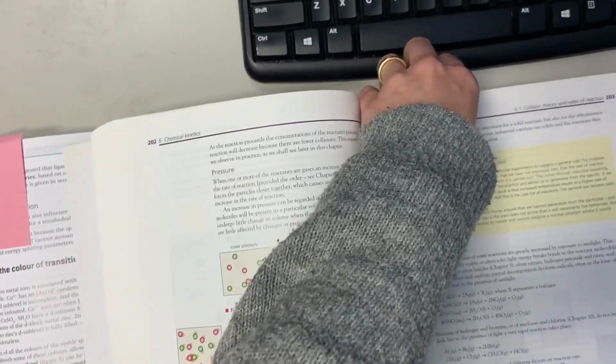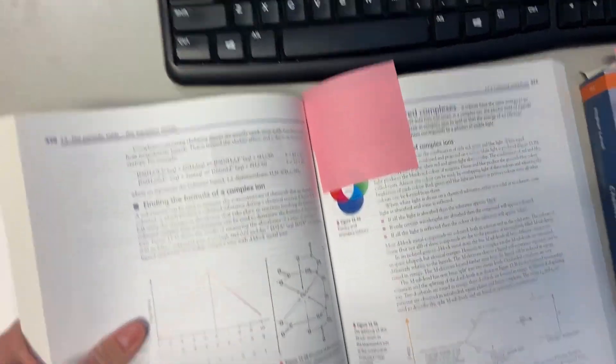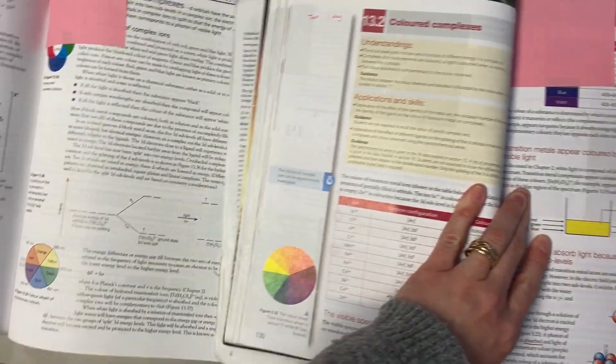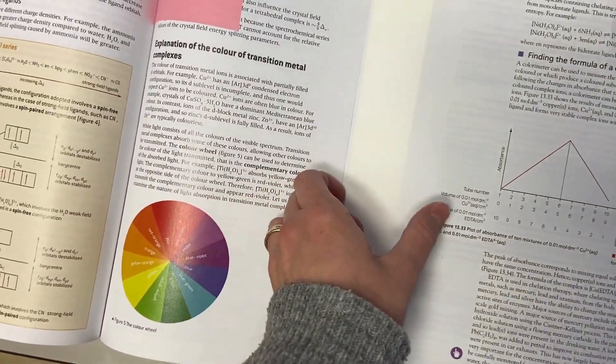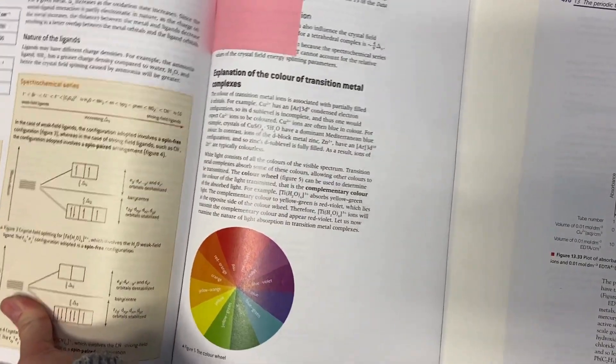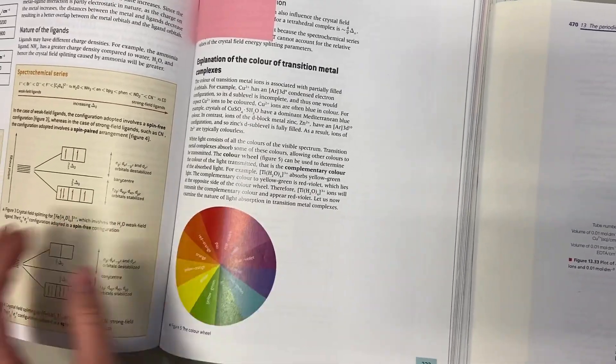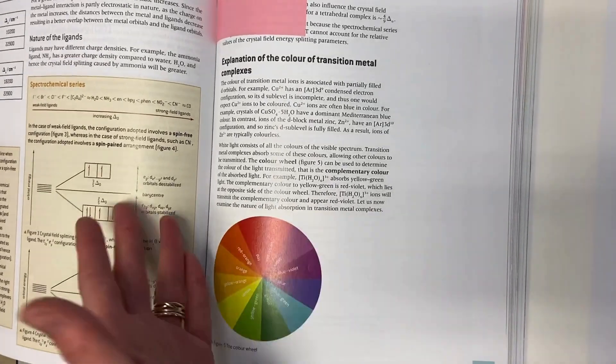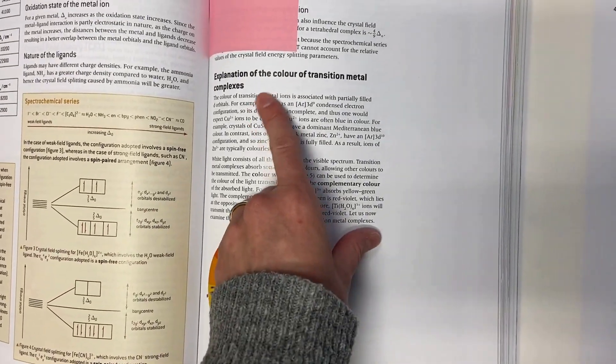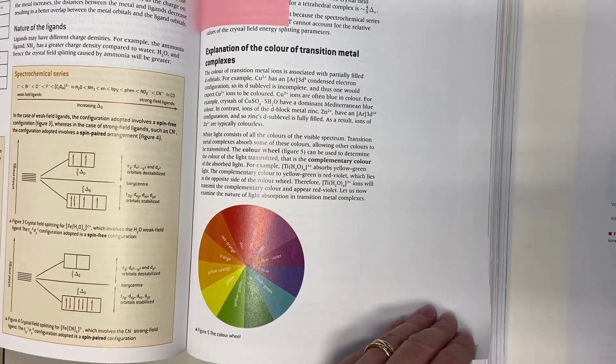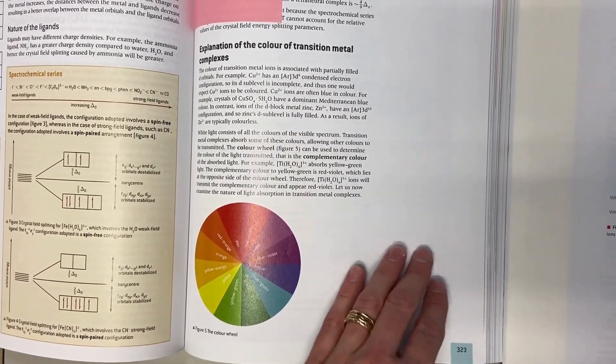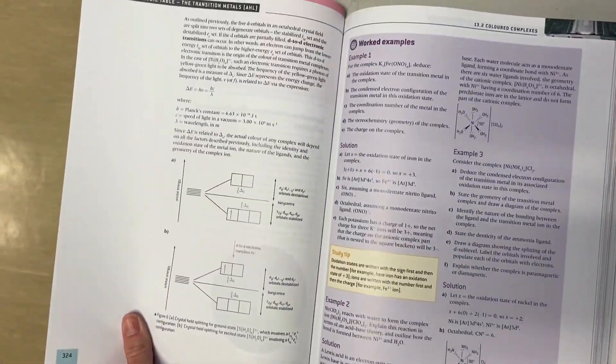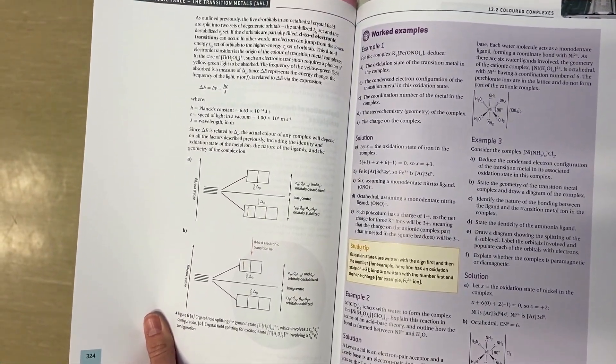We'll look at chapter 13 with the transition metals and colors because this is a big topic and there are a lot of exam questions on this. Look, this is the Oxford textbook explanation of the color of transition complexes. Again, this is a topic you want to be comfortable with and you want to understand. There's this page and that page and that is it. That's all.